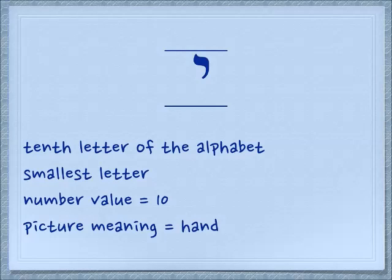The first letter we're going to look at is the Yud. Start on the right side and count up to 10 — you'll find the Yud. It's the smallest letter of the alphabet. It has a number value of 10 and just hangs at the top of the line; it doesn't take up the full line. The picture meaning for the Yud is the hand.